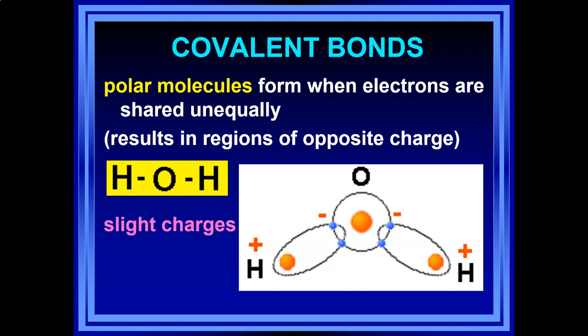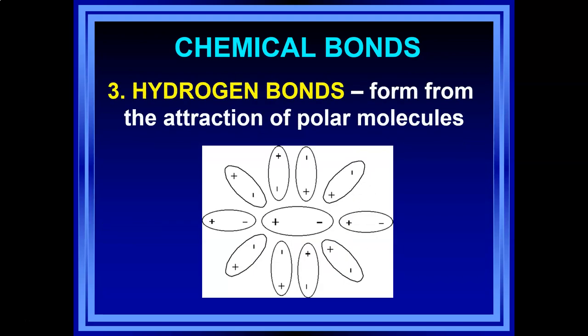Those slight charges lead to our third and final type of chemical bond: hydrogen bonds. They don't just occur between hydrogens — it's a general chemistry term. They form from the attraction of polar molecules: the mostly-positive end of one polar molecule attracts the mostly-negative end of surrounding polar molecules, and vice versa. The molecules arrange themselves so that the positive and negative ends are together — that's a hydrogen bond.